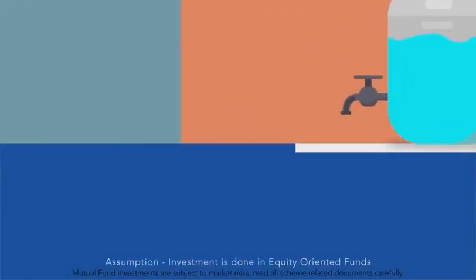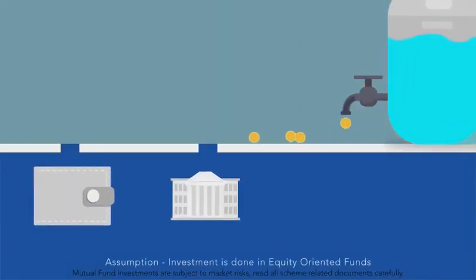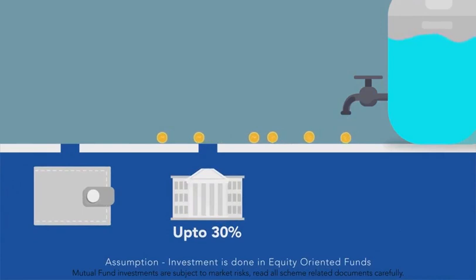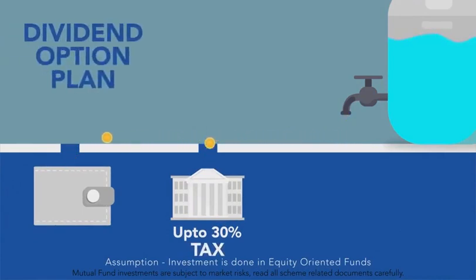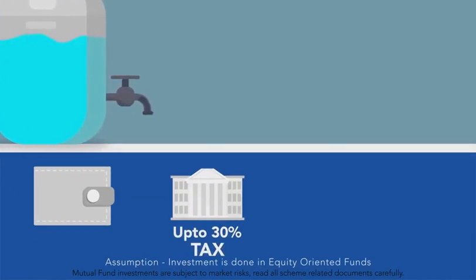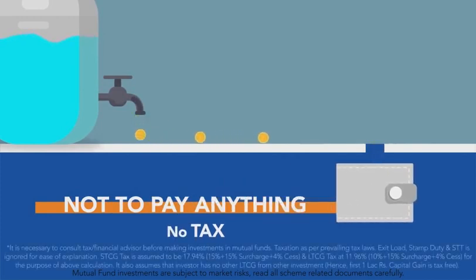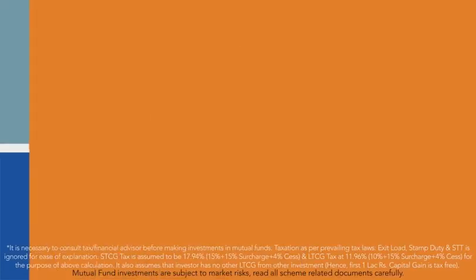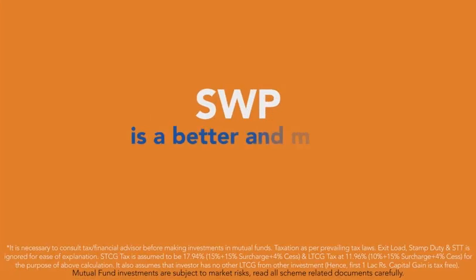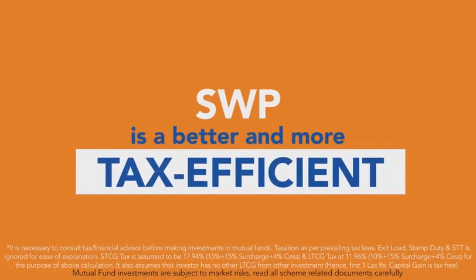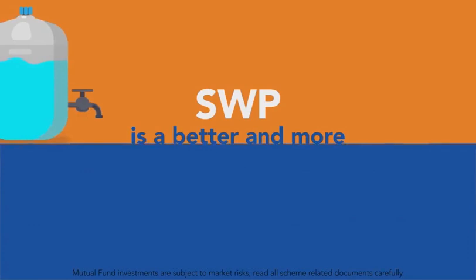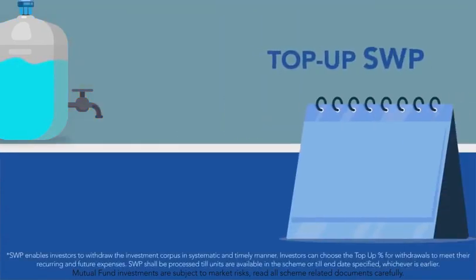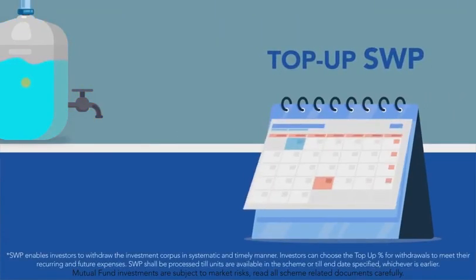In such a case, if you selected the dividend option, you will have to pay up to 30% tax as per your tax slab. Whereas if you are withdrawing money using SWP, you will not have to pay anything in such a case. So SWP is a better and more tax-efficient option.